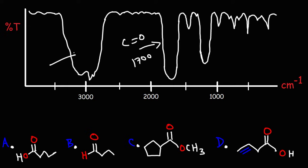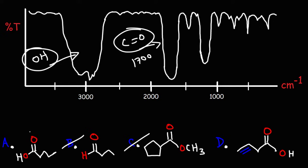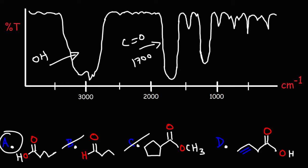We do have a very strong, very broad O-H stretch between, looks like, 2700 to 3300. This indicates an O-H functional group, which means we could eliminate answer choices B and C, which don't have it. When you have the carbonyl C=O stretch and the O-H stretch combined, that's a good indication that you have a carboxylic acid. So right now we're between choices A and D.